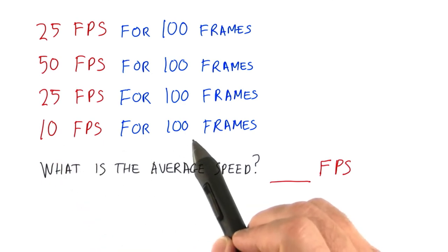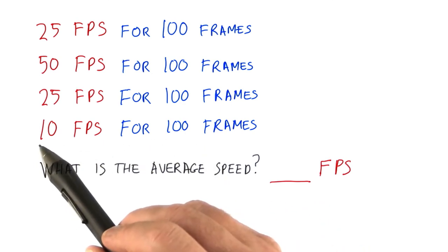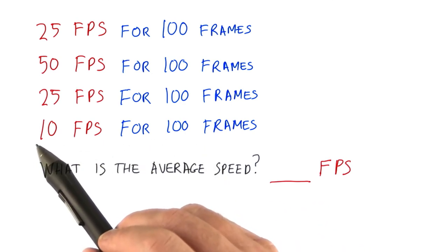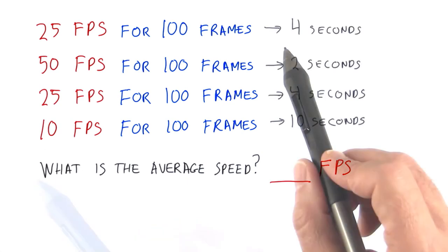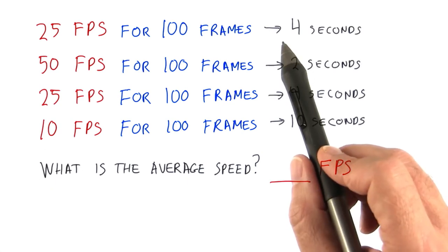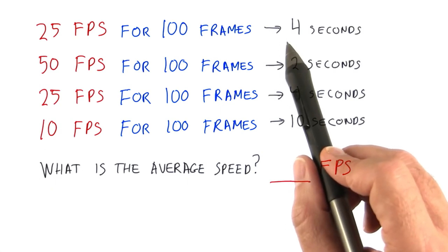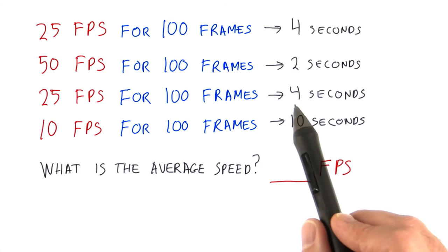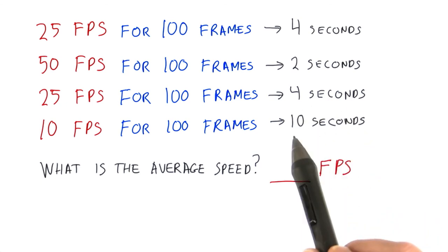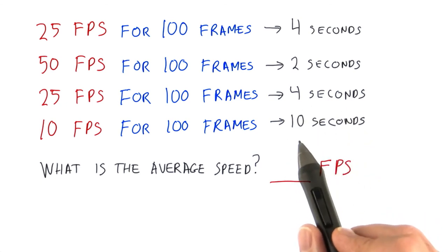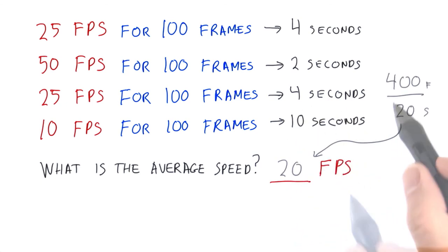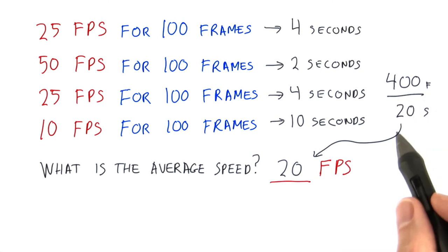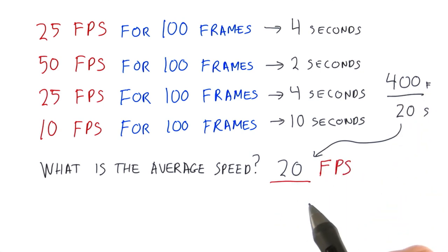Divide 400 miles by this number of hours and you'll get your average number of miles per hour. Using this idea, we see that the first set of frames takes 4 seconds to view, the second 2 seconds, third 4 seconds, and the fourth 10 seconds — a total of 20 seconds. 400 frames divided by 20 seconds is 20 frames per second.